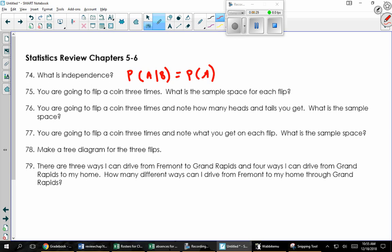So on 75, it says we're going to flip a coin three times. What's the sample space for each flip? So each flip is either heads or tails. Now the next one says we're going to flip it three times and see how many heads and tails I get. What's the sample space?